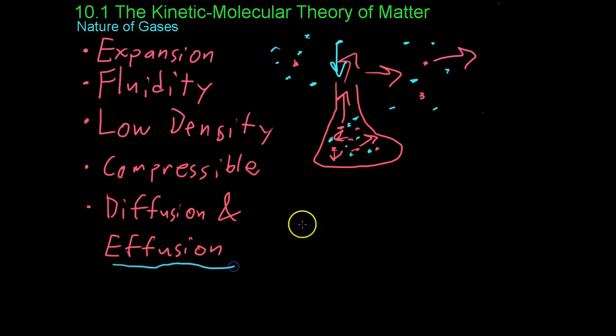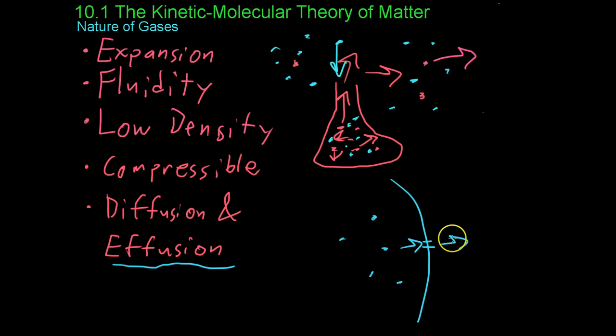Effusion, on the other hand, is the ability of a gas to pass through a tiny opening. Let's say you had helium in a balloon and there was a little hole right there. It's a measure of the rate at which individual or small groups of molecules can diffuse through that hole to intermix with whatever gas is on the outside.